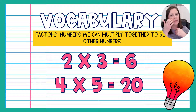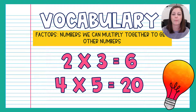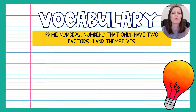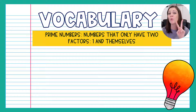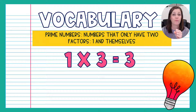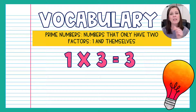You probably remember learning about fact families in elementary — that's all we're talking about here. Next word we need to know is prime number. Prime numbers only have two factors; there are only two whole numbers you can multiply together to get that number. For example, three is a prime number because the only two whole numbers you can multiply to get three are one and three itself.